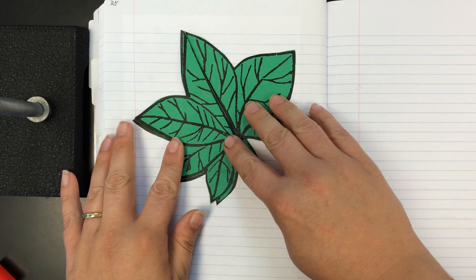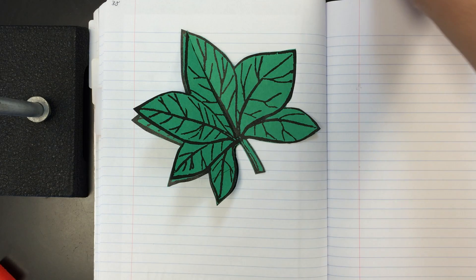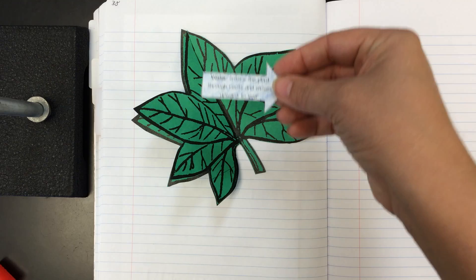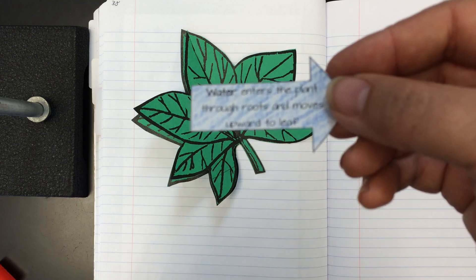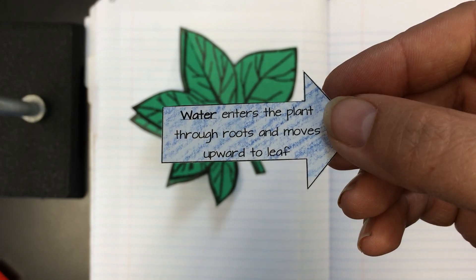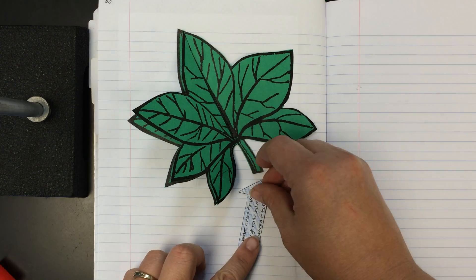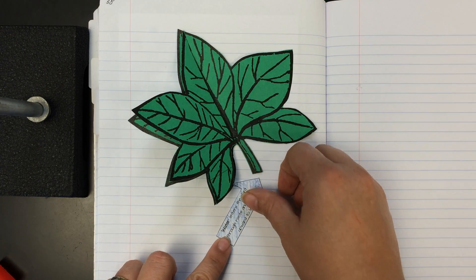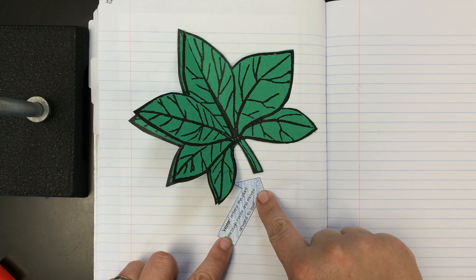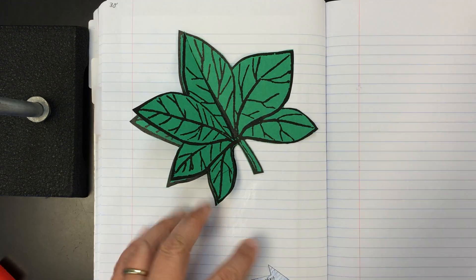So now I've got my major parts. Finally, we're going to stick the arrows on. So let's talk a little bit about what each arrow is and where it's going to go. So the first arrow we're going to do is the arrow for water. Water enters the plant through the roots and moves upward to the leaf. So on my leaf I'm going to put my water arrow showing where water goes in my plant. So it's going to go from the roots up to the leaves. So let's go ahead and glue that arrow into place.